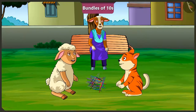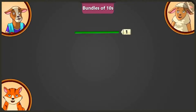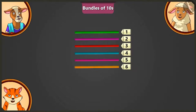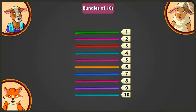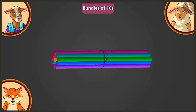Bundles of ten? Yes, Lily, bundles of ten. Lily, out of the straws kept here, count ten straws and keep them aside. One, two, three, four, five, six, seven, eight, nine and ten. Well done, Billy. Now, we will tie these ten counted straws together with this rubber band. Now, this has become one bundle of ten.